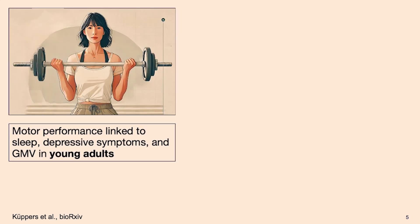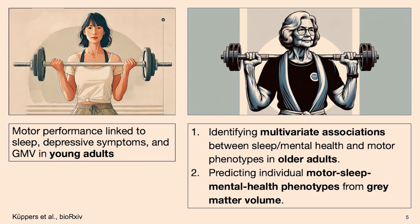Knowing how it looks in young adults, we were wondering how this multivariate association looks in older adults. And we wanted to go a step further — not just take the population-wide view, but see if we could predict individual-level expressions of motor, sleep, and mental health phenotypes based on gray matter volume.